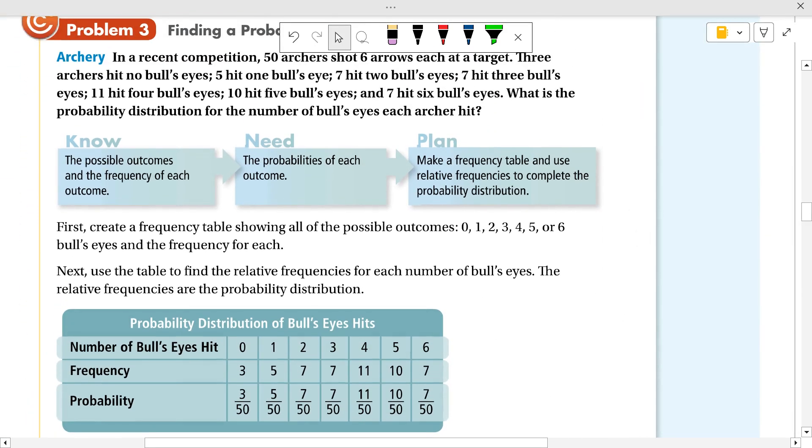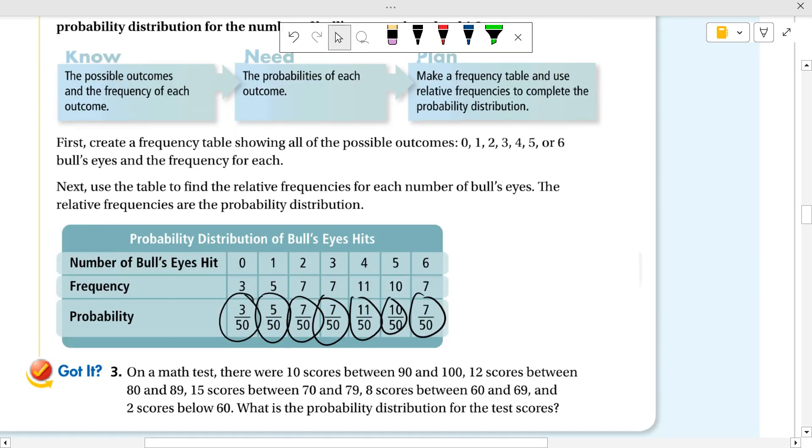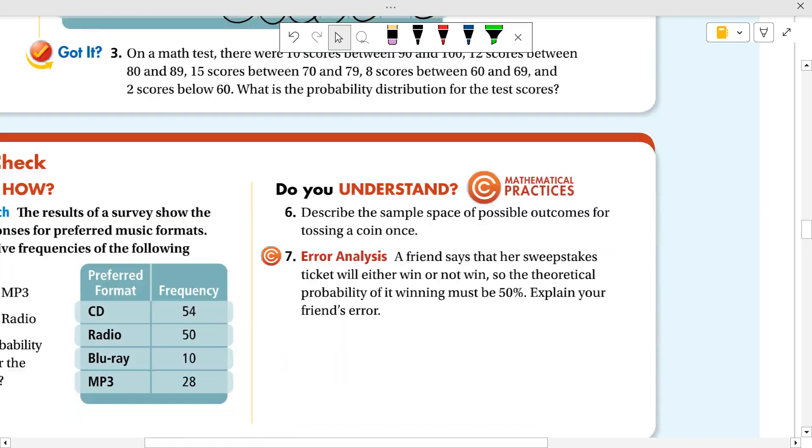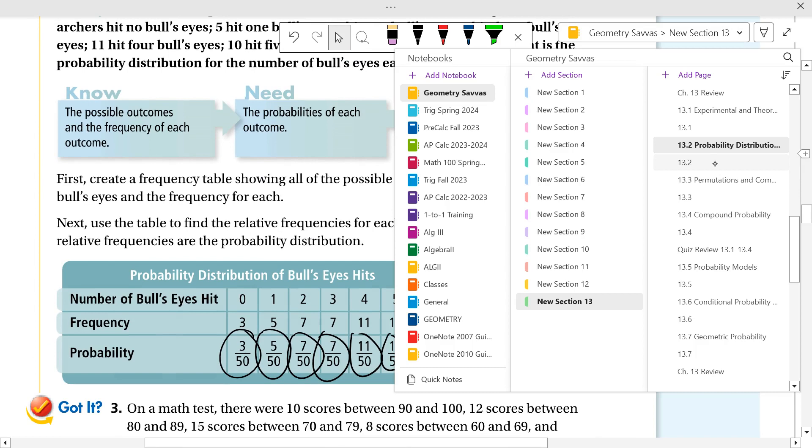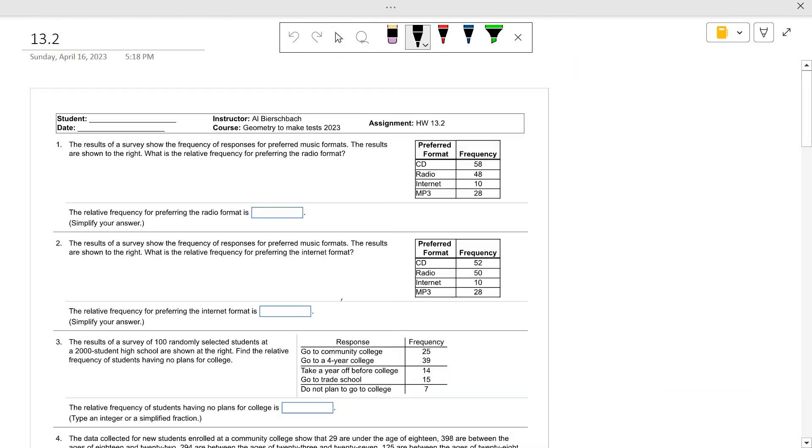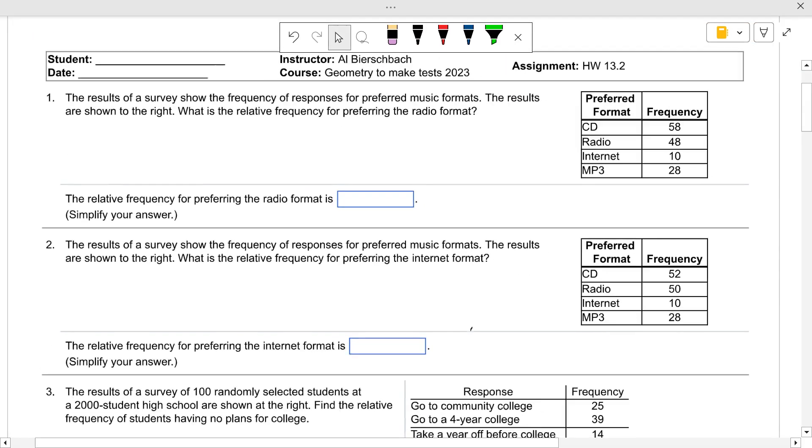Probability distributions basically set up the probability for each time for you, okay? So it gives you what you need to know. All right, let's go to the problems that you will be seeing. Okay, the results of a survey are on the right. What's the relative frequency of preferring radio?